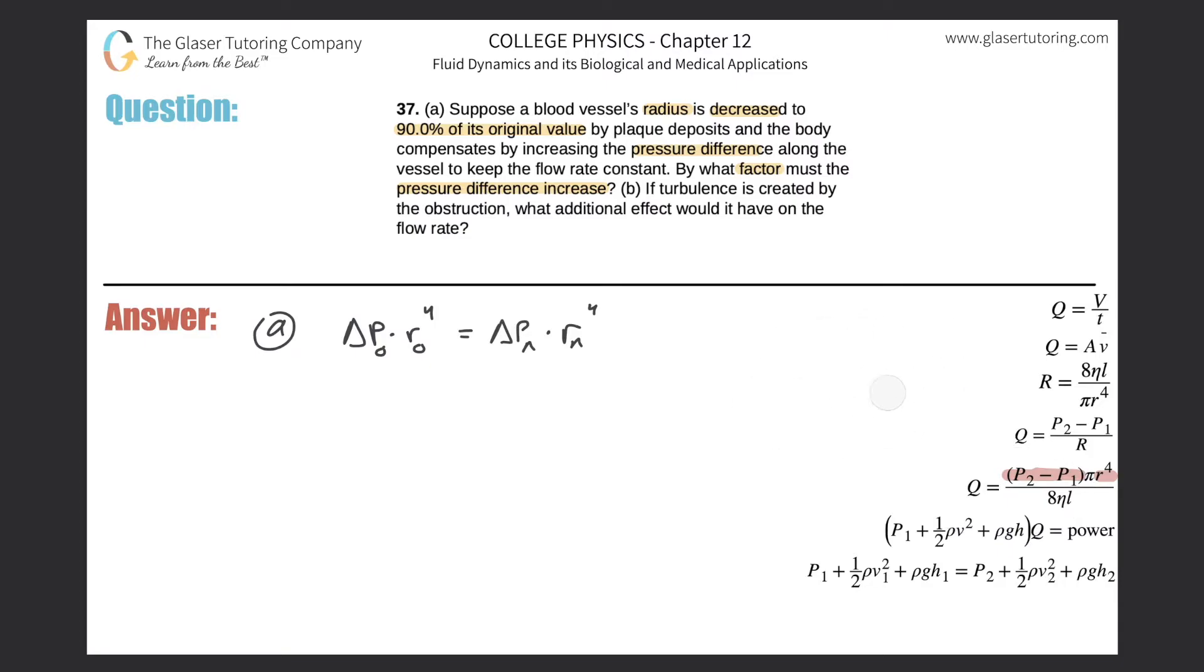So that being the case, we know that if the new radius is smaller than the old, that means the new pressure will be larger than the old. P_n must be greater than P_o. If I'm looking for the factor by which the pressure difference increases, I'm looking for the ratio of the new pressure to the old pressure.